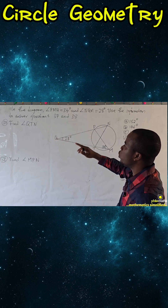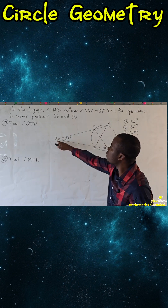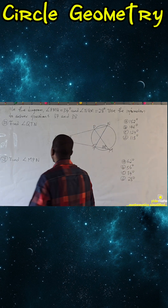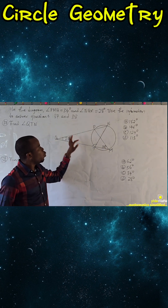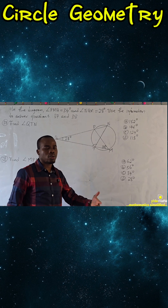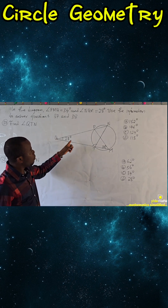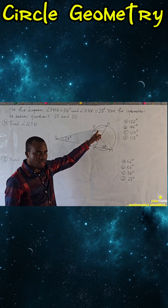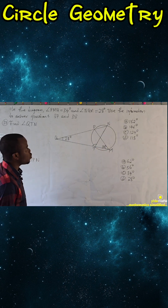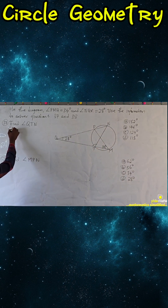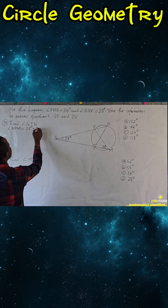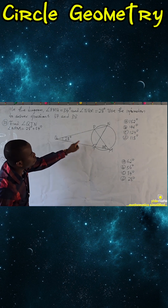Question 37 says find angle QTF. What I usually tell my students is to start from the angles you know and work outward. Looking at this, I can find angle NPM because the exterior angle of a triangle is the sum of the two opposite interior angles. So angle NPM is simply 28 degrees plus 34 degrees.